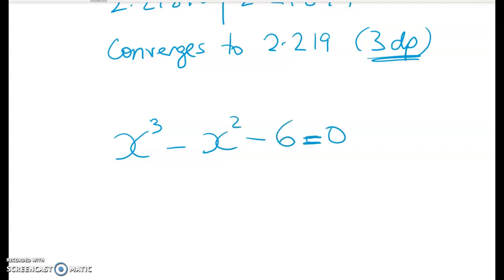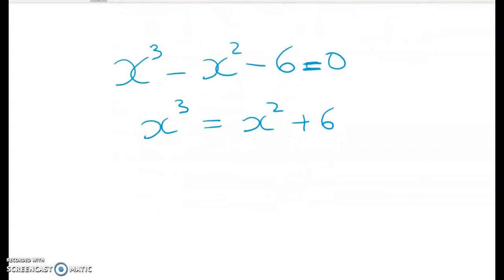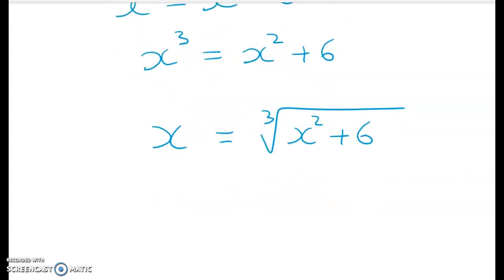So if we had x cubed minus x squared minus six equals zero, we could have done this. x cubed is equal to x squared plus six. And now we could cube root both sides. So x is equal to the cube root of x squared plus six. So we could use this as an updating rule. And then we could go and explore whether this one converges or not, because they won't always converge. Now we talked about that a bit in class. I'm going to talk about that again a bit more in class when we start doing revision.